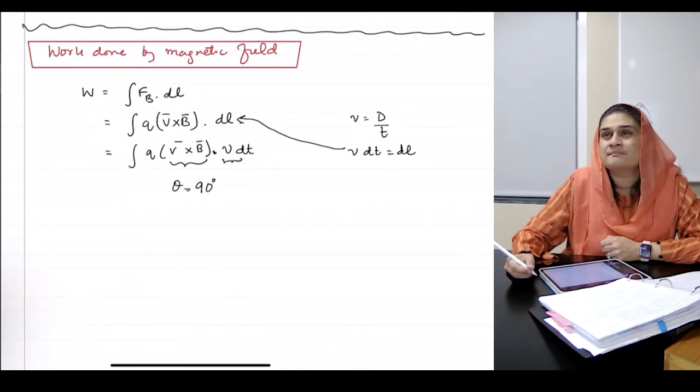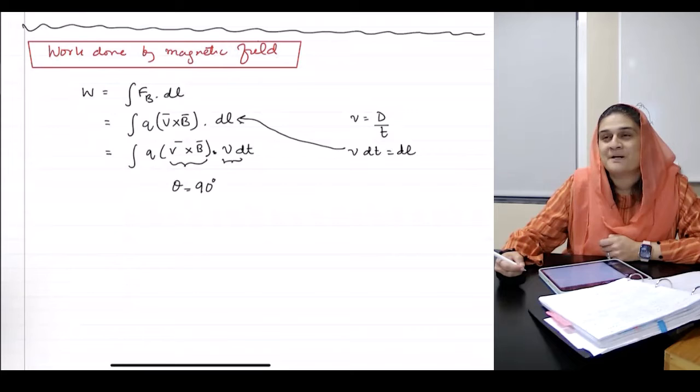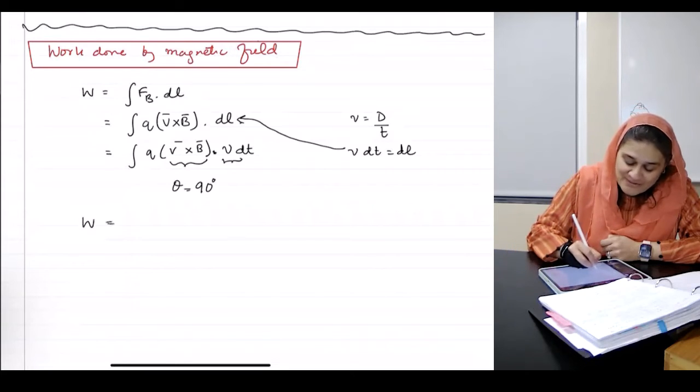Is the angle 90 degrees? What's the dot product with angle 90? Cosine of 90 is? So the work done is?